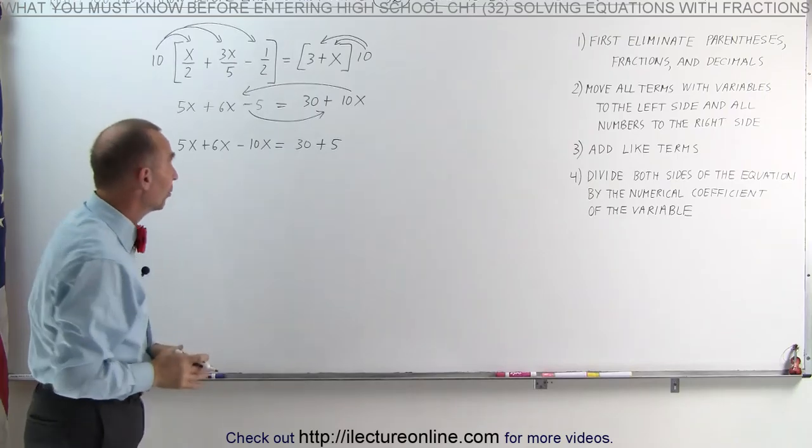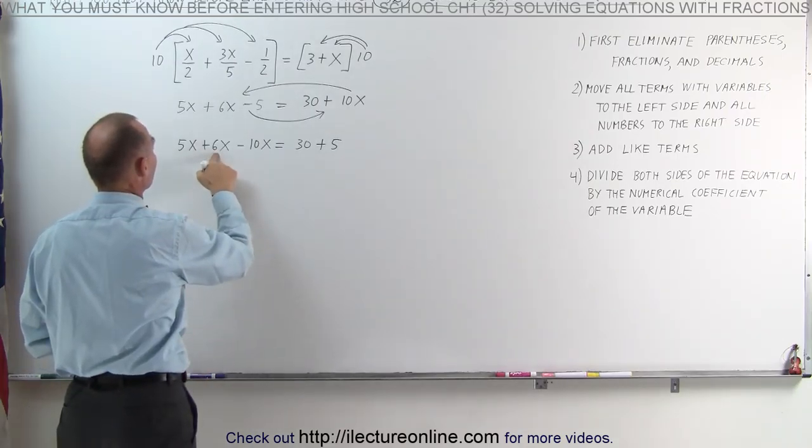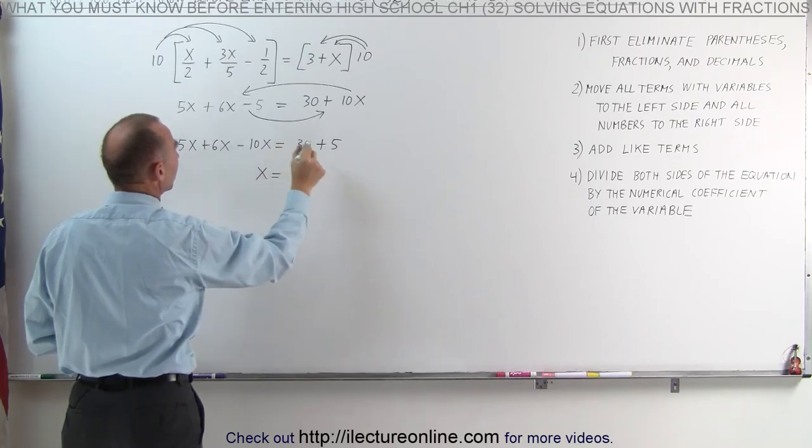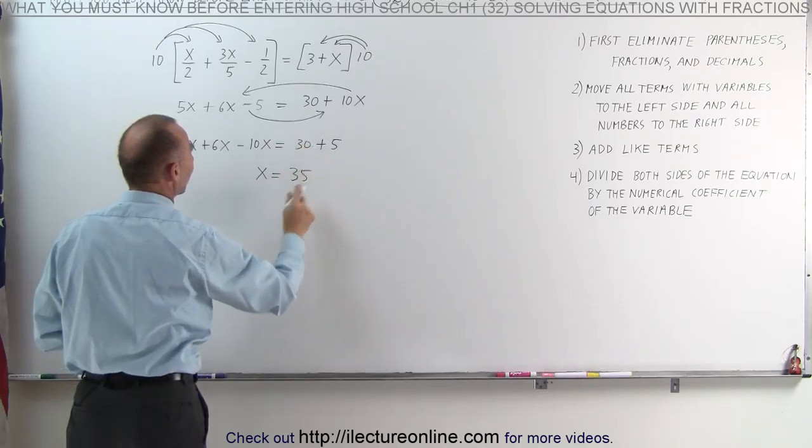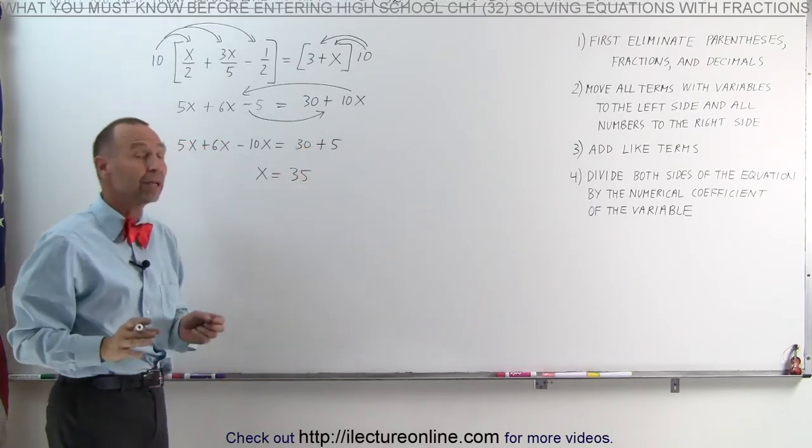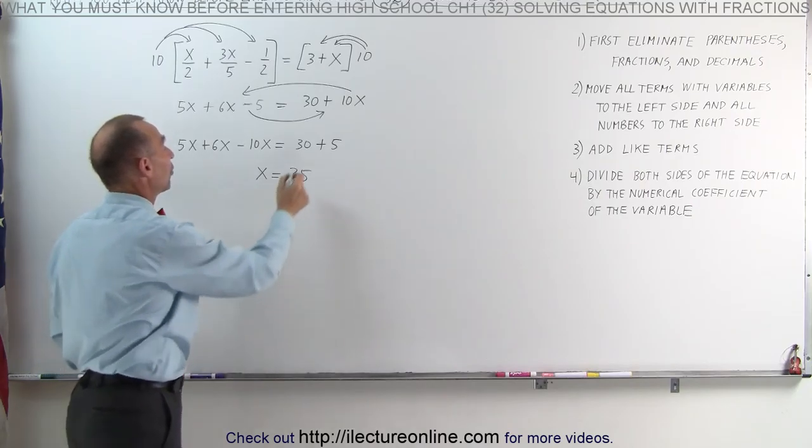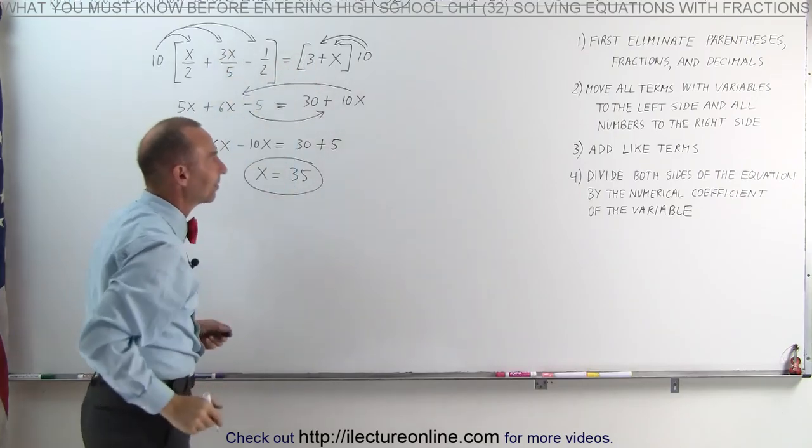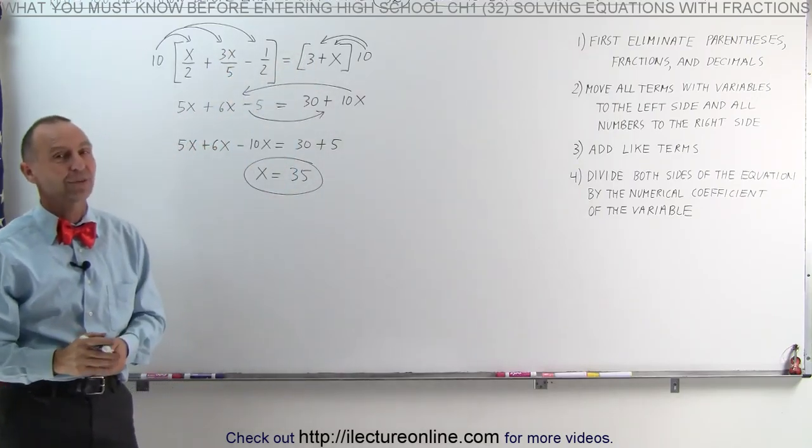Now we can combine like terms. On the left side, we have 5 plus 6 is 11, minus 10, which is simply 1x equals 30 plus 5, which is 35. We don't have to go to step 4 because we already have the solution of the equation. When x equals 35, the left side equals the right side. And that's how it's done.